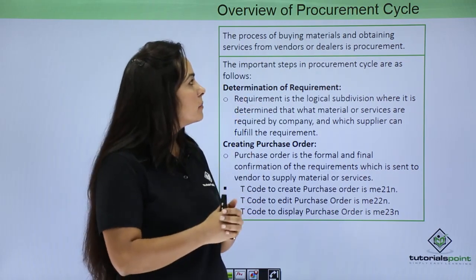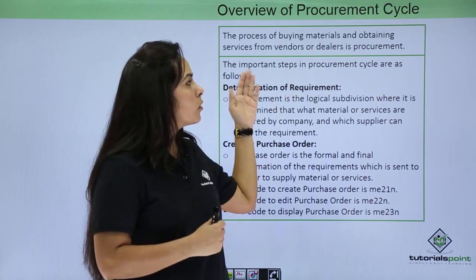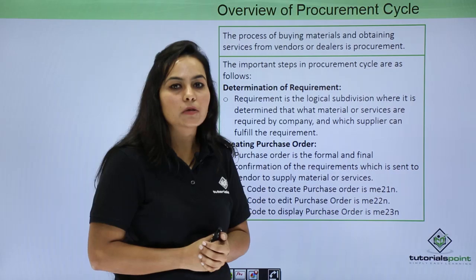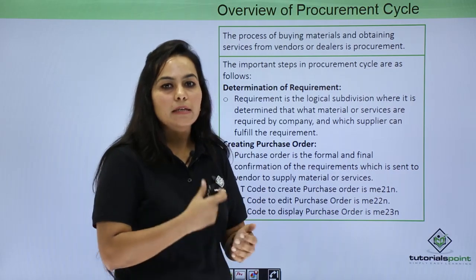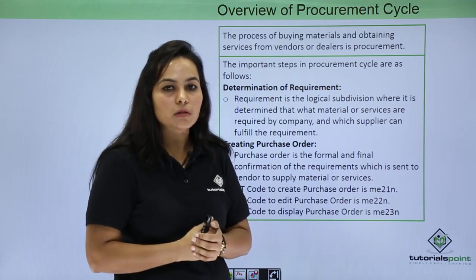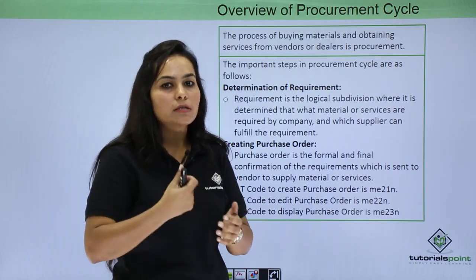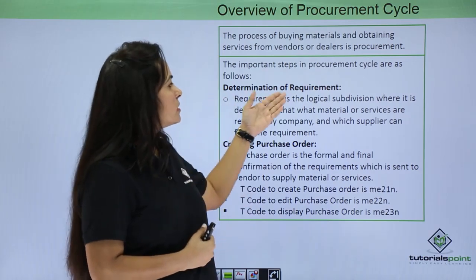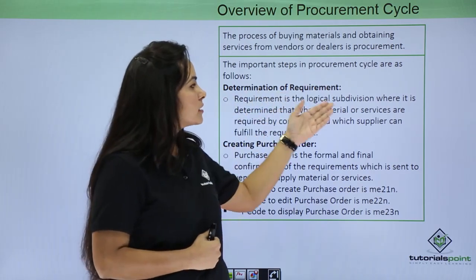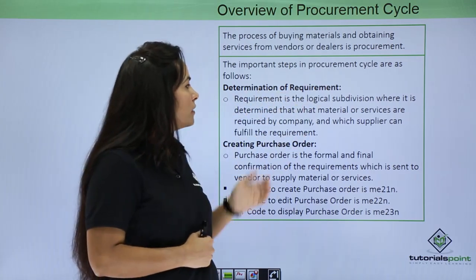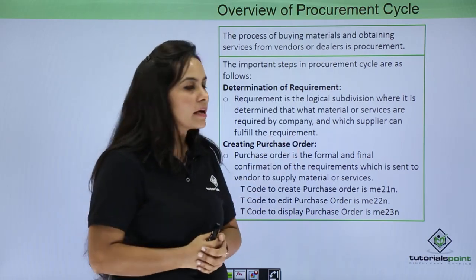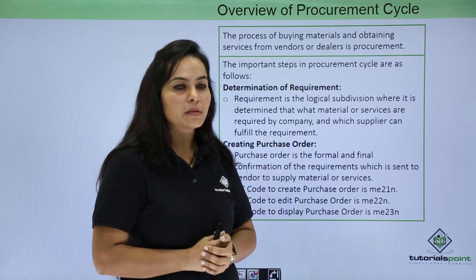The procurement process is nothing but buying material and obtaining services from a vendor. Let me explain the procurement cycle with a simple example. Suppose you want to buy a computer — so the computer is your requirement. The first step is determination of requirement, which is a logical subdivision where it is determined that material or services are required by the company.